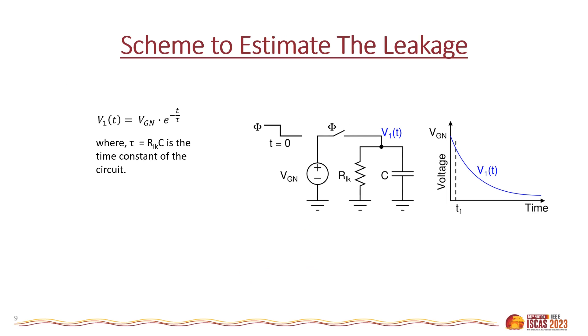To understand the scheme to estimate the leakage, let us consider a simple RC circuit. Here, the resistance RLK models a leakage path, which is primarily due to leakage through the switches and the gate tunneling current. Initially, the capacitor was charged to voltage VGN. At time t equals zero, switch phi is opened, and the capacitor discharges through the leakage resistance RLK. The voltage V1 across the capacitor C is expressed as VGN times exponential of minus t upon tau, where tau is the time constant of the circuit. Consider a time t which is much smaller than the time constant tau. The expression for the voltage V1 as a function of time can be approximated as VGN minus VGN times t upon tau.